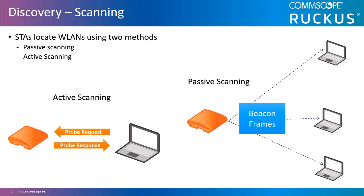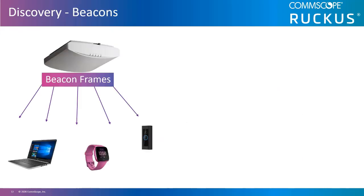Both passive scanning and active scanning are used to locate a basic service set for connectivity by the client stations. Passive scanning relies solely on beacon frames, and active scanning uses probe request and probe response frames. The data included in beacon frames is also found in most probe response frames. Access points can send advertisements informing devices of their service set identifier and other information by transmitting a management frame subtype called the beacon frame.